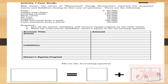I want you to answer Activity 1 on page 5 of your module in your notebook. May Aman, the owner of Manyaman Samji Restaurant, reported her business assets and liabilities during its first year of operation. These are: cash 90,000 pesos; tables and chairs 20,000; cooking utensils 120,000; meat cutter 40,000; aircon 70,000; supplies 35,000 pesos; cash borrowed from a bank 100,000; cash borrowed from a friend 30,000.